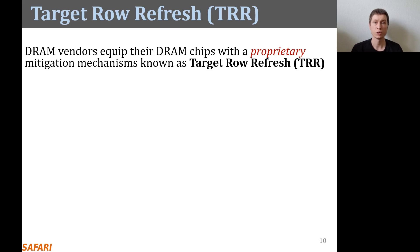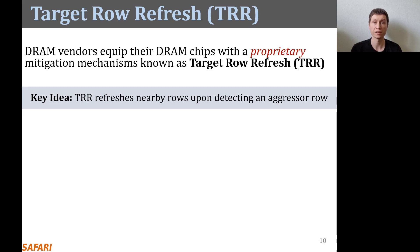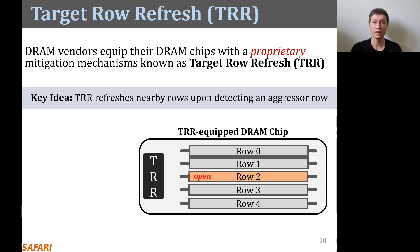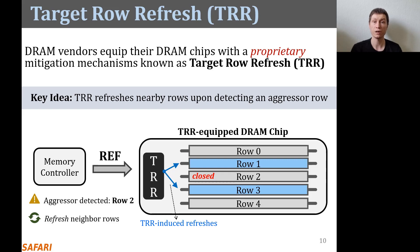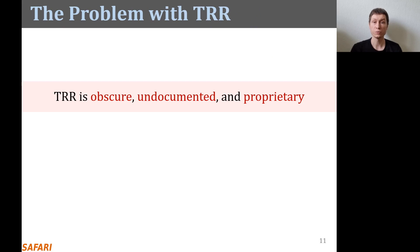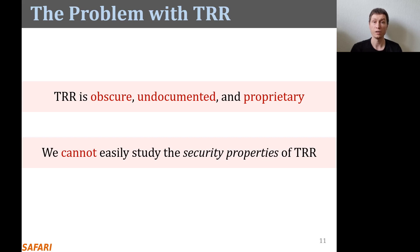To protect their DRAM chips against RowHammer, DRAM vendors currently implement proprietary RowHammer mitigation mechanisms typically called target row refresh, or TRR. The key idea of TRR is to refresh nearby rows upon detecting an aggressor row. The TRR mechanism detects an aggressor row as a result of rapidly activating and precharging the same row. To protect the neighboring victim rows, TRR refreshes them by performing TRR-induced refresh operations, piggybacking onto refresh commands that the memory controller periodically issues. Although this is how TRR operates at a high level, different vendors implement TRR differently and the exact operation is unknown. Therefore, TRR is obscure, undocumented, and proprietary, and today we cannot easily study its security properties.